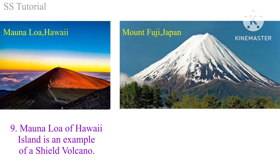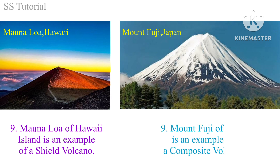Mauna Loa of Hawaii Island is an example of a shield volcano, and Mount Fuji of Japan is an example of a composite volcano.